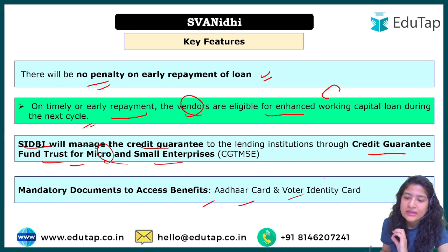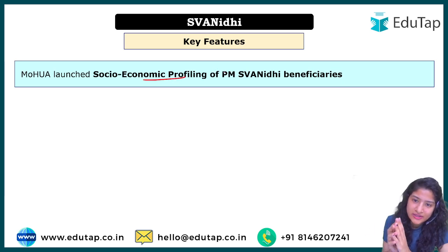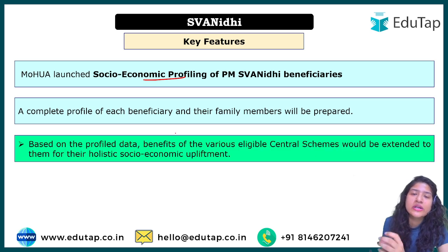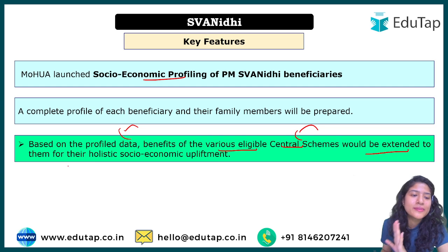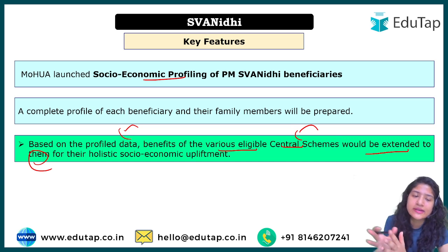Mandated documents to access benefits are the Aadhaar card and voter ID card. Apart from that, the Ministry of Housing and Urban Affairs has also launched socio-economic profiling, under which proper information and profiling of the beneficiary and their family will be done. This is done so that whatever benefits they can actually avail — based on the data provided — will be given to them. Benefits of various eligible central sector schemes will be extended to them wherever applicable. It is also mandatory to be part of Pradhan Mantri Jeevan Jyoti Bima Yojana and Pradhan Mantri Suraksha Bima Yojana.